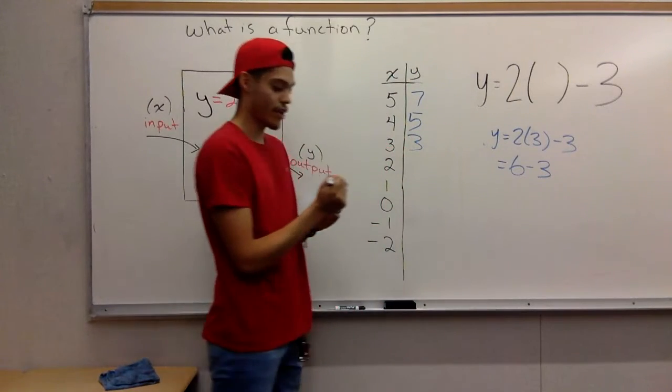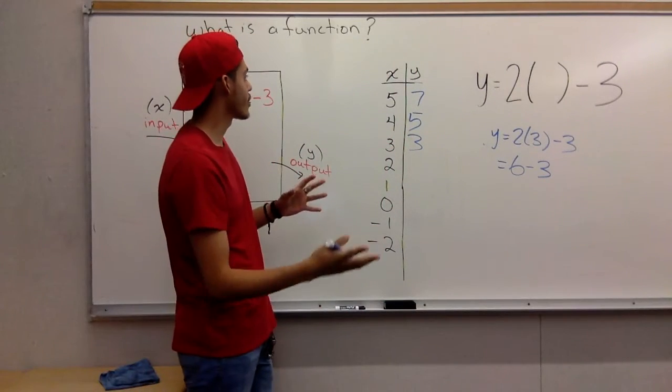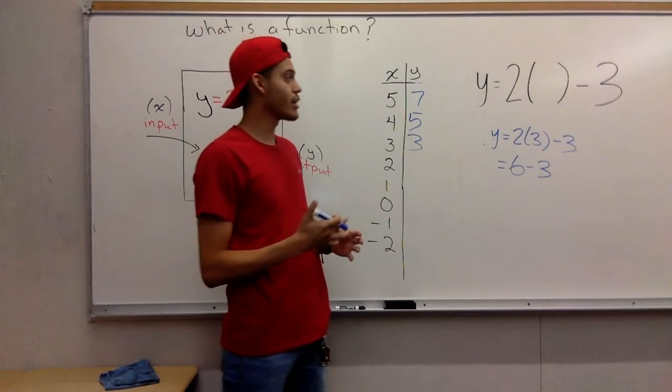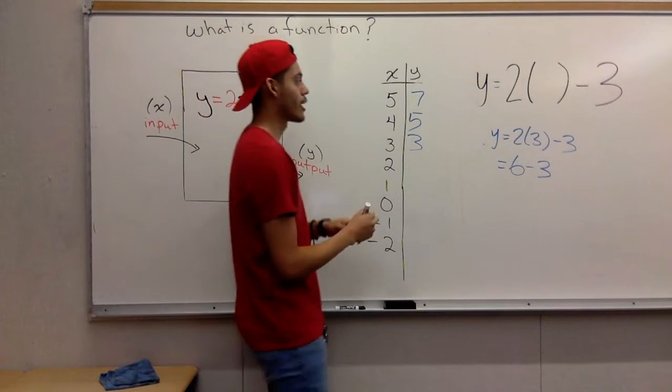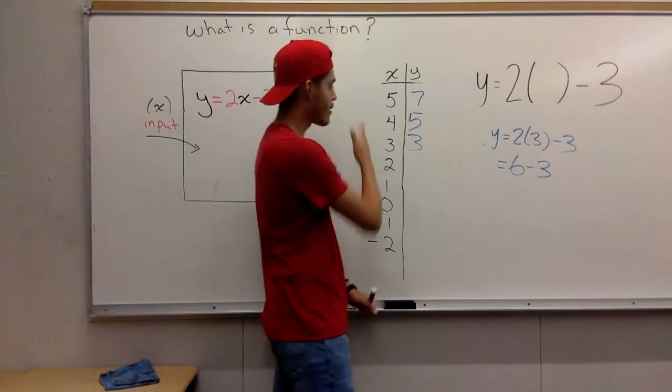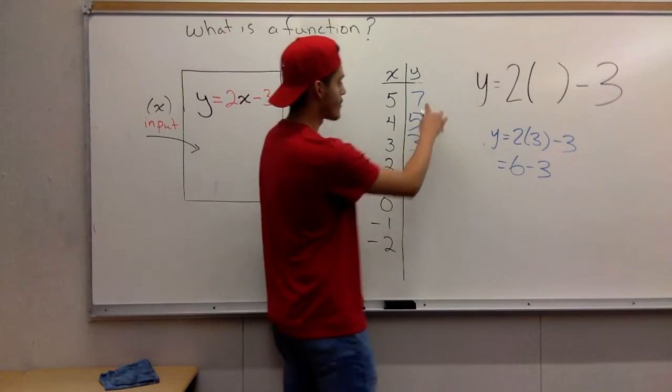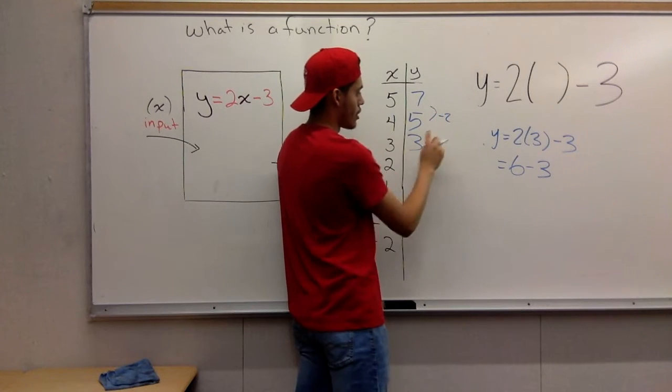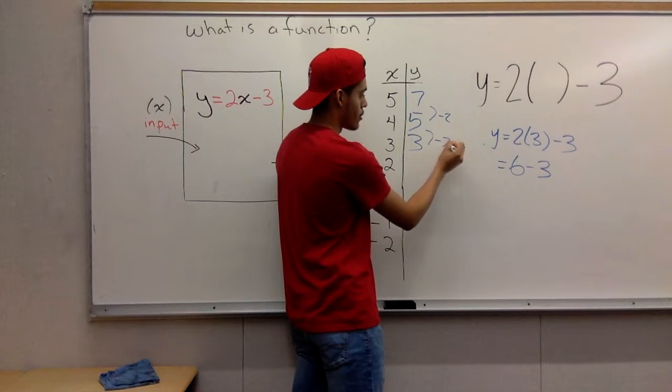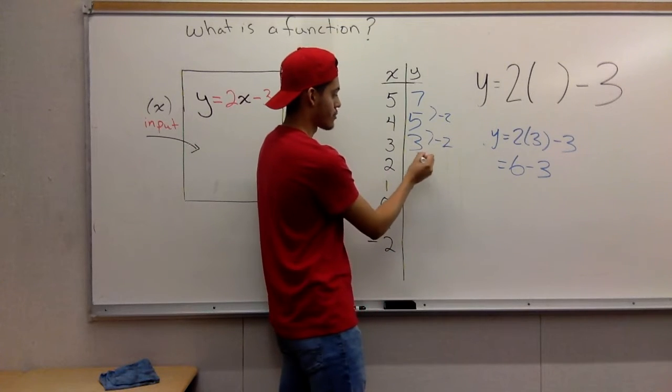Now if you see a pattern here, because it is a linear equation, there's multiple types of equations, but let's just focus on this one. If you see a pattern going down, then the pattern is going to continue if all the numbers are in order. You have 7 to 5, that's minus 2. 5 to 3, you have minus 2.